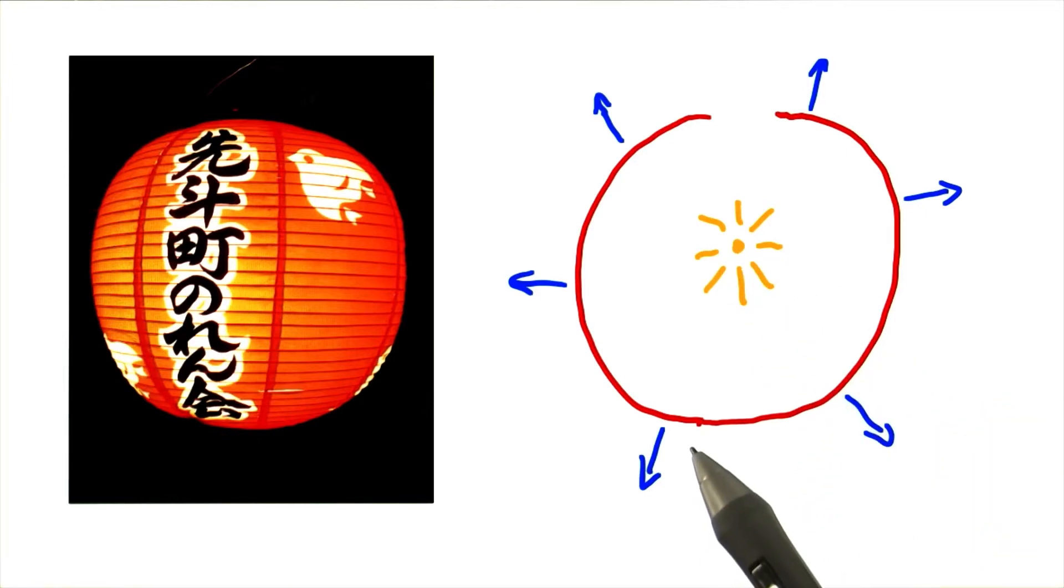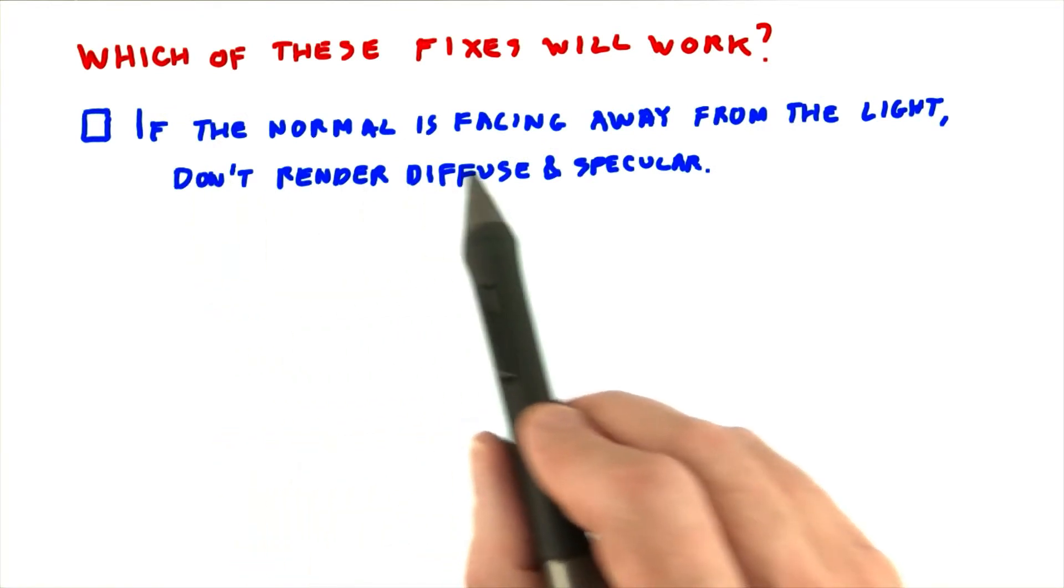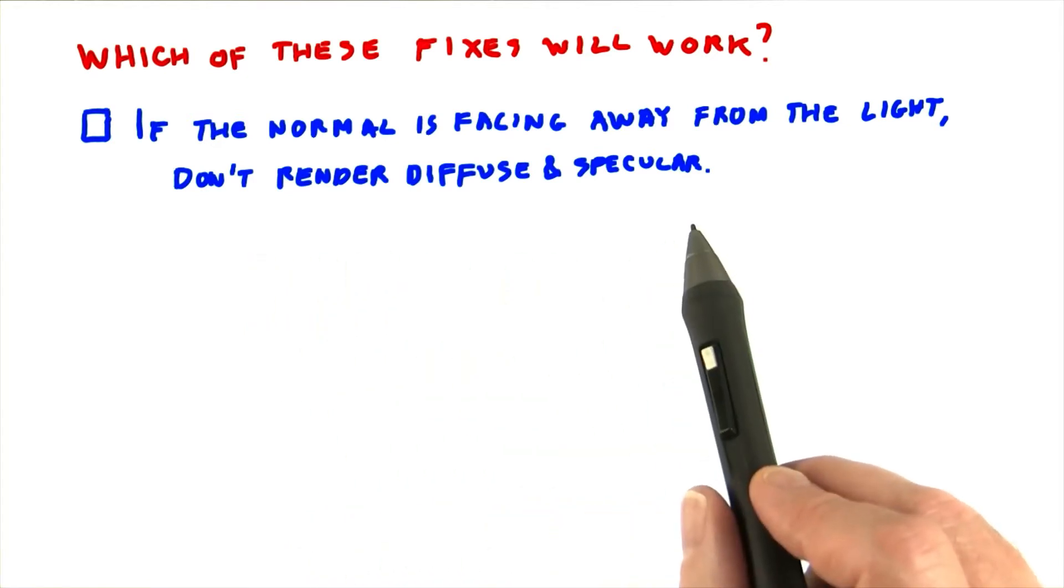Say we want to fix this problem and have the surface be double-sided. Which of the following fixes will work? First, if the normal is facing away from the light, don't render diffuse and specular.